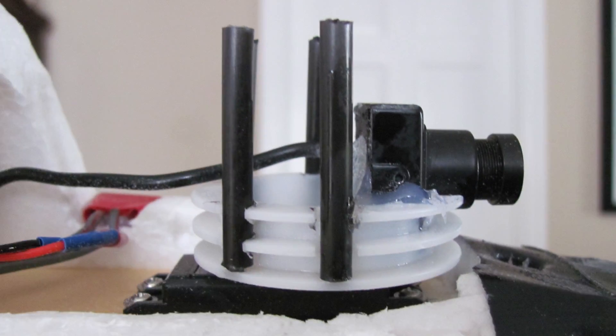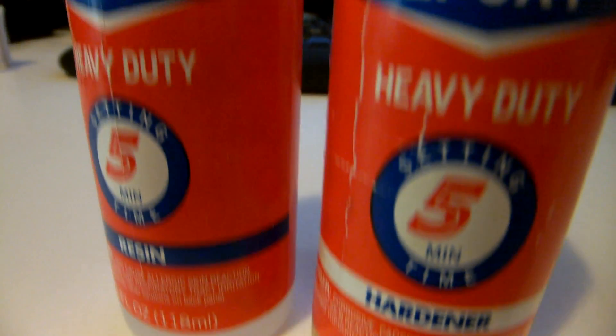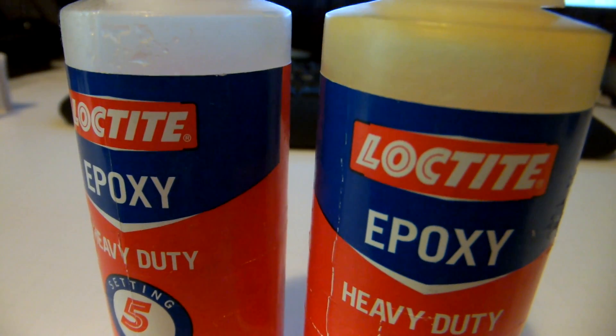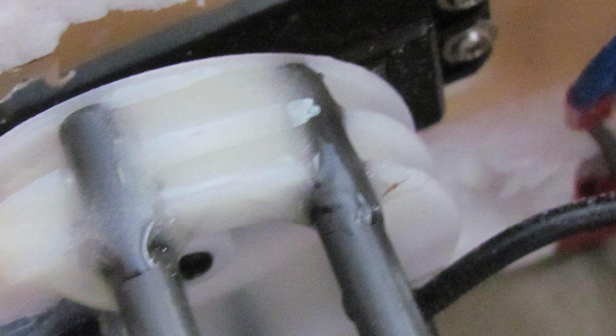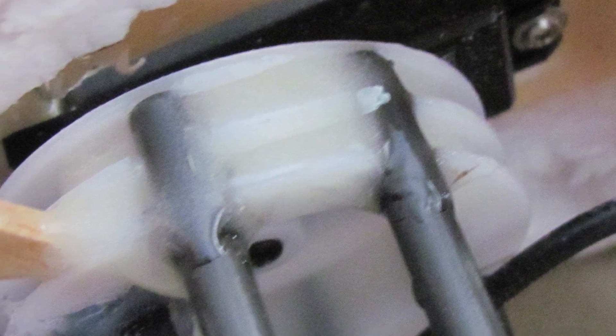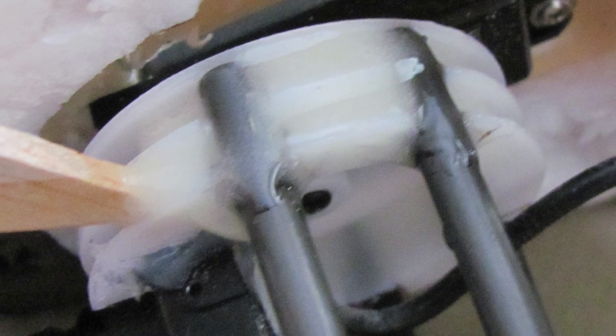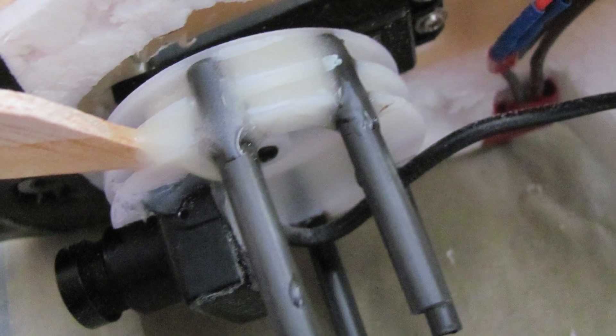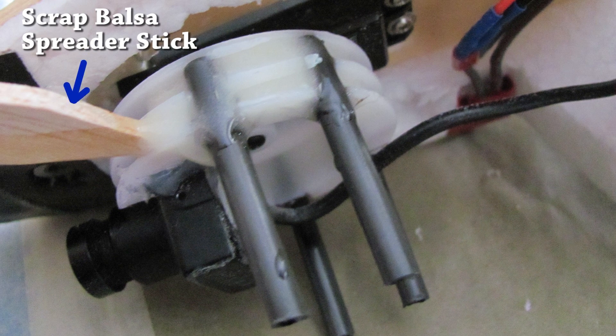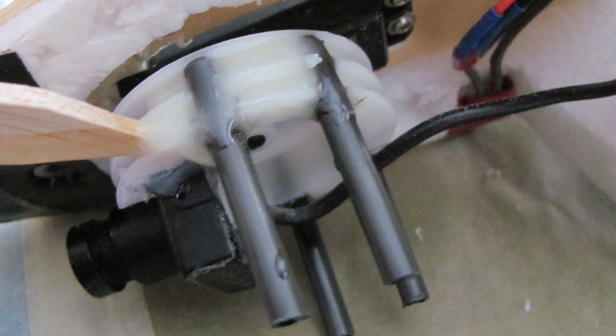Once you're satisfied with how the risers are positioned and they're all lined up, mix up some 5-minute epoxy and glue up one side. Don't try to do both sides at the same time because the epoxy will run everywhere. Do one side at a time, and I recommend 5-minute epoxy so it sets up fast. As it sets, you may have to keep nudging it around to keep it from running down the sides. It's quick and painless. After the epoxy sets for at least 30 minutes or so, you can begin the final phase.